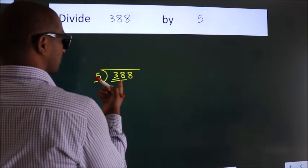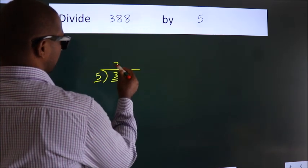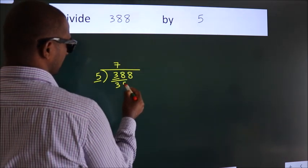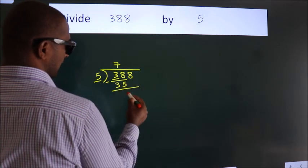A number close to 38 in the 5 table is 5 times 7 equals 35. Now we should subtract. We get 3.